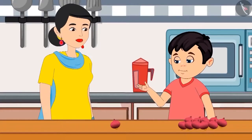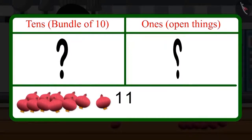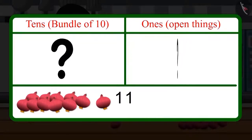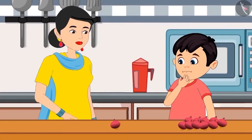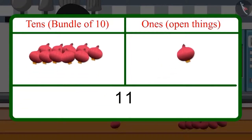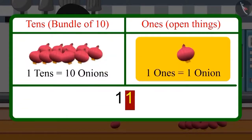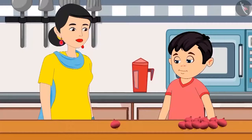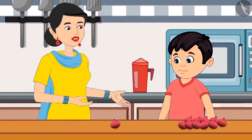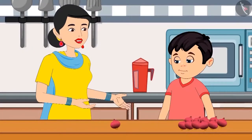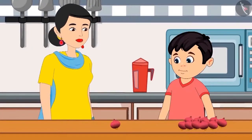Have you understood? Yes, Mommy. So, now can you tell me how many tens and ones are there in 11 onions? There would be 1 ten and 1 one in 11 onions. Isn't it, Mommy? Yes, Choto. You are absolutely right.